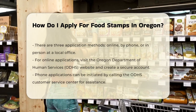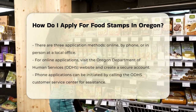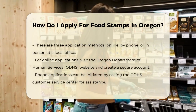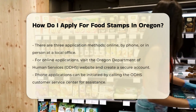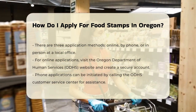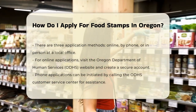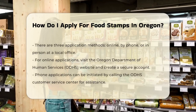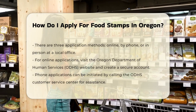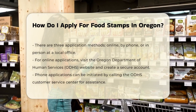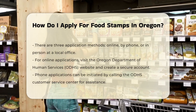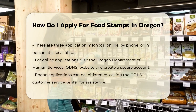Choosing your application method: you can apply for SNAP benefits online, by phone, or in person at a local office. For the online application, fill out the application on the Oregon Department of Human Services (ODHS) website. You will need to create an account with a user ID and password to keep your information private and secure. This account allows you to save your application to work on later.